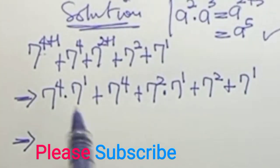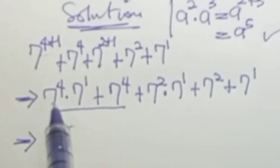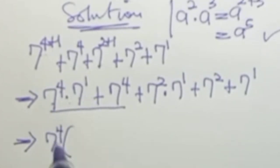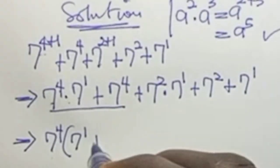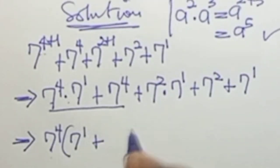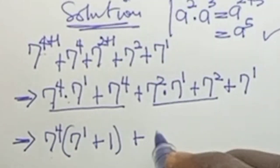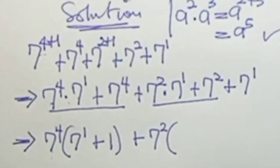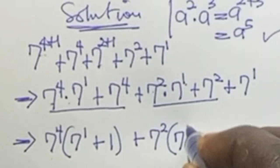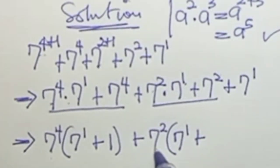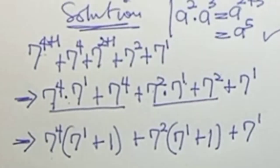In the next line we factor out what is common between the first two terms, which is 7 to the power of 4. So we get 7⁴ times the quantity 7¹ plus 1, plus 7² times 7¹ plus 7² plus 7¹.